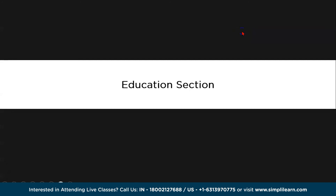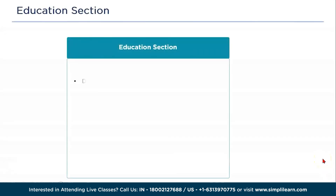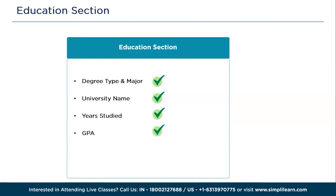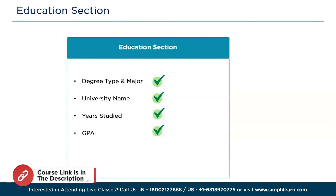Now let's discuss the education section of your AI engineer resume. The education section is where you provide information about your academic background. You can structure it with: degree type and major, then university name, then years studied, then GPA or percentage as preferred by your institution. The education section allows potential employers to understand your academic background and any specialized knowledge important to the AI engineer role you are pursuing.